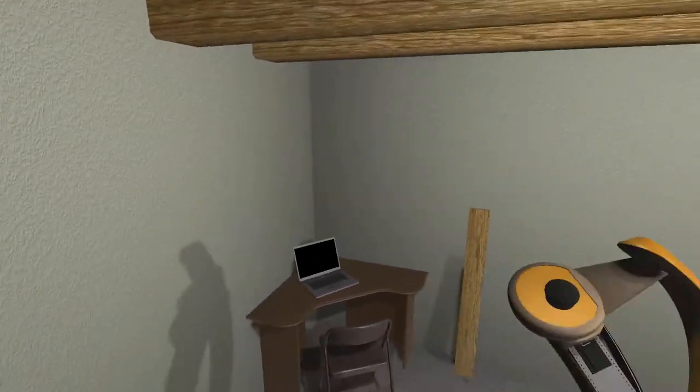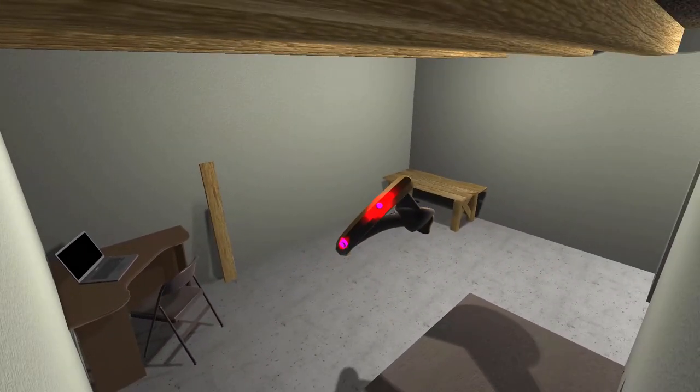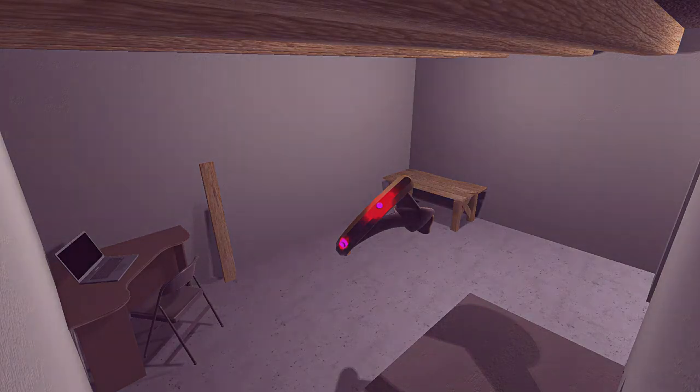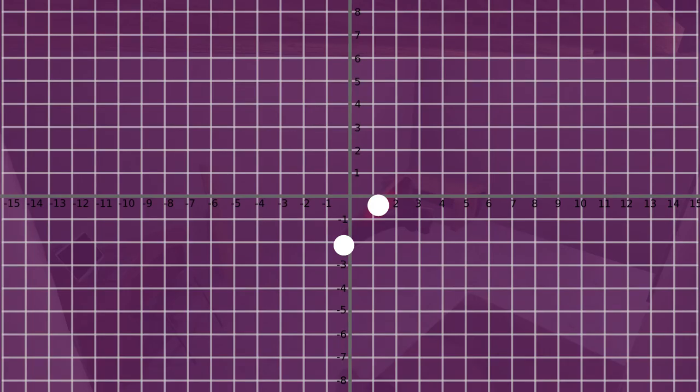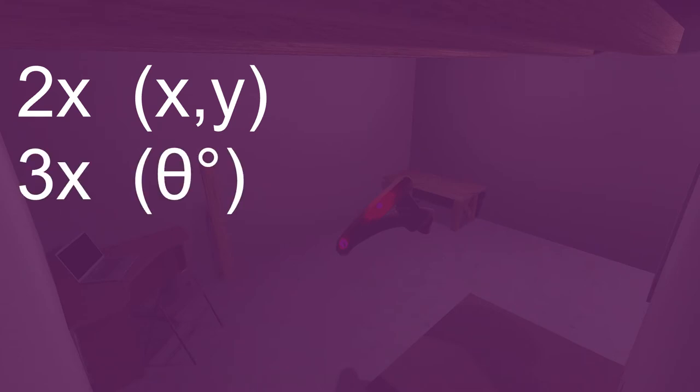The Wii remote over here on the wall is going to be acting as our base station, but like I mentioned in my last video it doesn't actually see the controller. It only sees two IR dots and passes that information over to me in the form of X and Y coordinates. So in total all we have to work with is two sets of XY coordinates and three angles from a gyroscope.